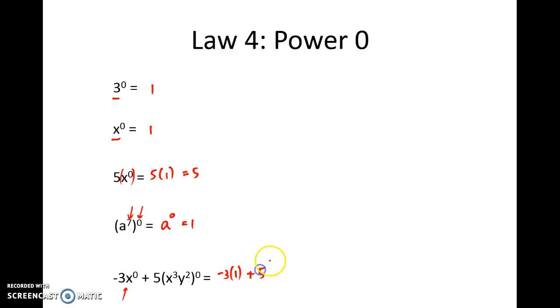Plus we've got 5 lots of this rather convoluted expression. But as we know from previously anything raised to the power of 0 is going to equal 1. So I've just got 5 lots of 1. So effectively I've got negative 3 plus 5 which simplifies to 2.